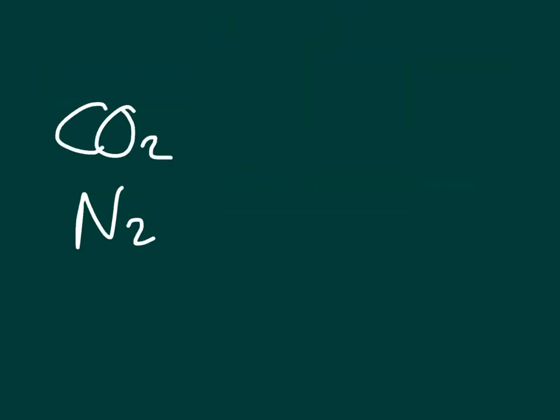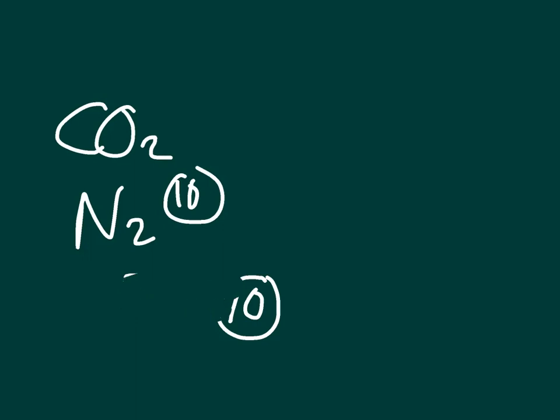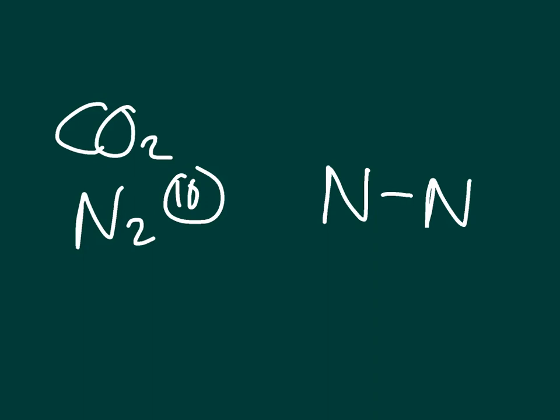Now let's move on to the more deceptive one: N2. It looks easy, but it isn't. If there are only two elements, there is no central atom. For valence electrons: one nitrogen has five, so two nitrogens give us ten valence electrons total. I'll put ten in the corner. Starting with a single bond between the two nitrogen atoms — I'm not done, because nitrogen wants eight electrons and right now I only have two shared between both.